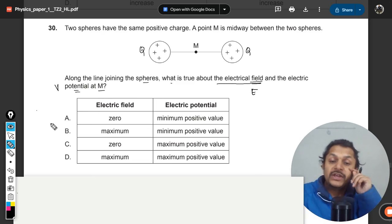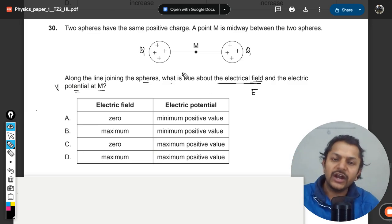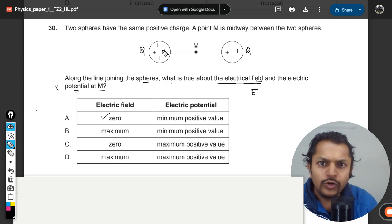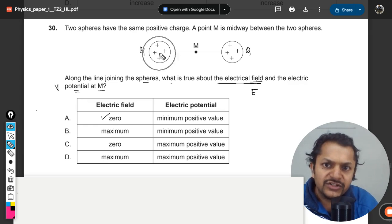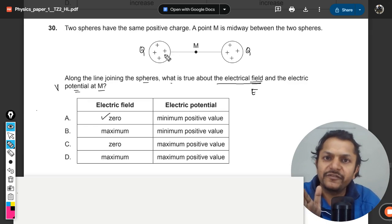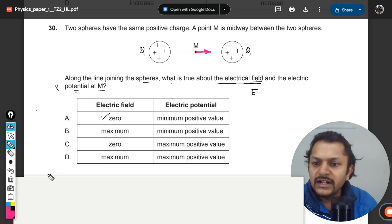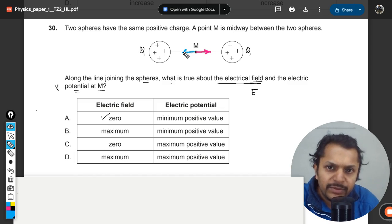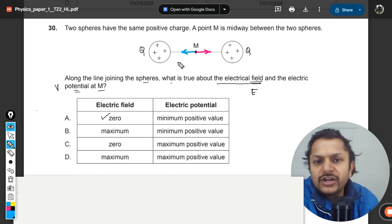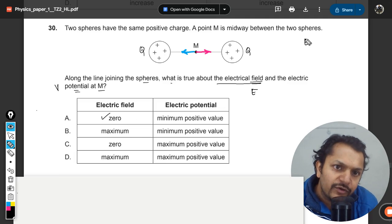We have to comment on the midpoint between the two charges. Clearly, the electric field will be zero. Why? Because this positive charge will be creating an electric field moving away from it at point M like this, and a similar charge—the same amount of charge, because the charge is the same and the distances are the same—so even the magnitude is the same, but it's created in the opposite direction, thereby canceling these two. So the net is zero.